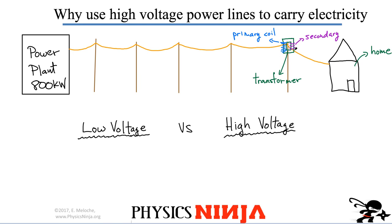We're just going to consider one transformer that steps down the voltage so it makes it 120 volts RMS once it gets to your home. Let's consider the comparison between low voltage carried across this line versus high voltage and see how much energy is dissipated in each case. If there's energy dissipated, that means there's a resistance — the resistance of the wire. The length is pretty long, so let's give it a nominal value of 12 ohms.